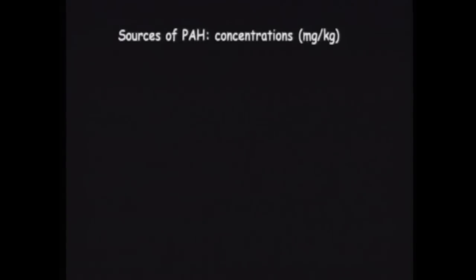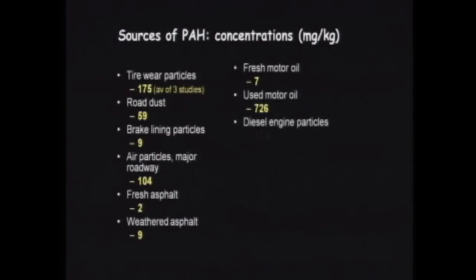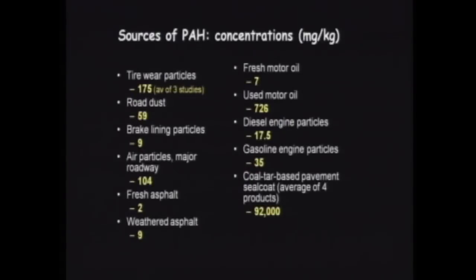Let's compare the concentrations in some of these urban sources. All of these values are pulled from published scientific literature where people have measured PAHs associated with different urban sources. Right off the bat, you can see that asphalt is very unlikely to be the source of a concentration of 1,500 milligrams per kilogram. Concentrations aren't additive — you can't mix asphalt and brake lining particles and get something twice as high. To create something at 1,500 mg/kg, you have to start with something much higher. Coal tar-based pavement sealcoat — the average of four products analyzed by the city of Boston — had a concentration of 92,000 milligrams per kilogram.